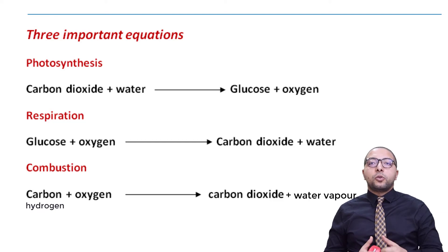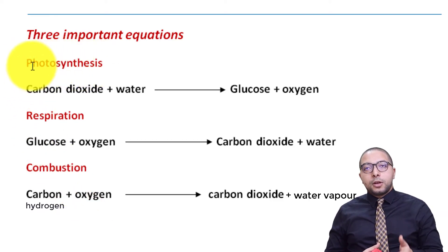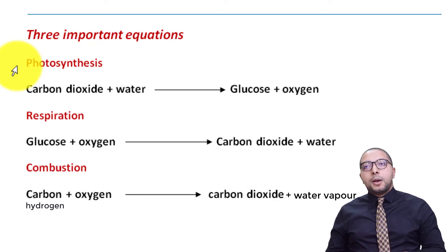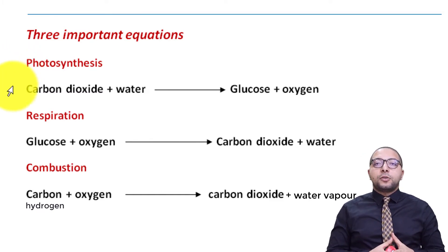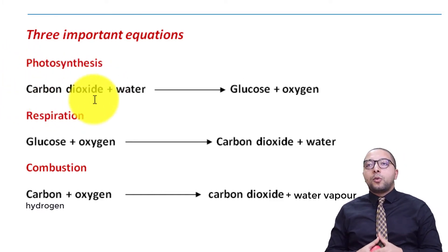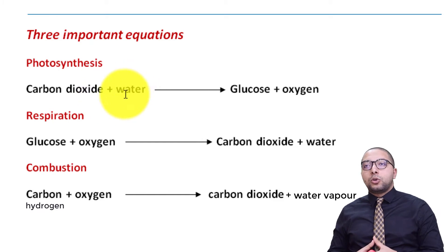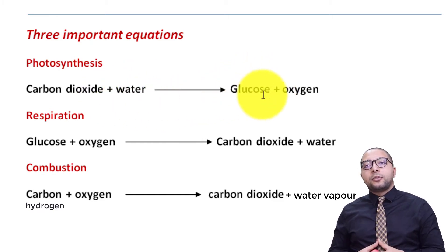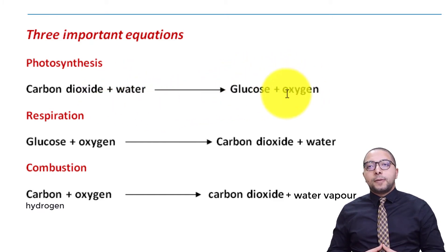The first equation is called photosynthesis. Photosynthesis is an important process where it takes place inside the plant in order for the plant to make its own food. Basically, carbon dioxide changes from a gas by the help of water into food which is called glucose stored inside the plant or it can be used for energy along with oxygen as a byproduct.